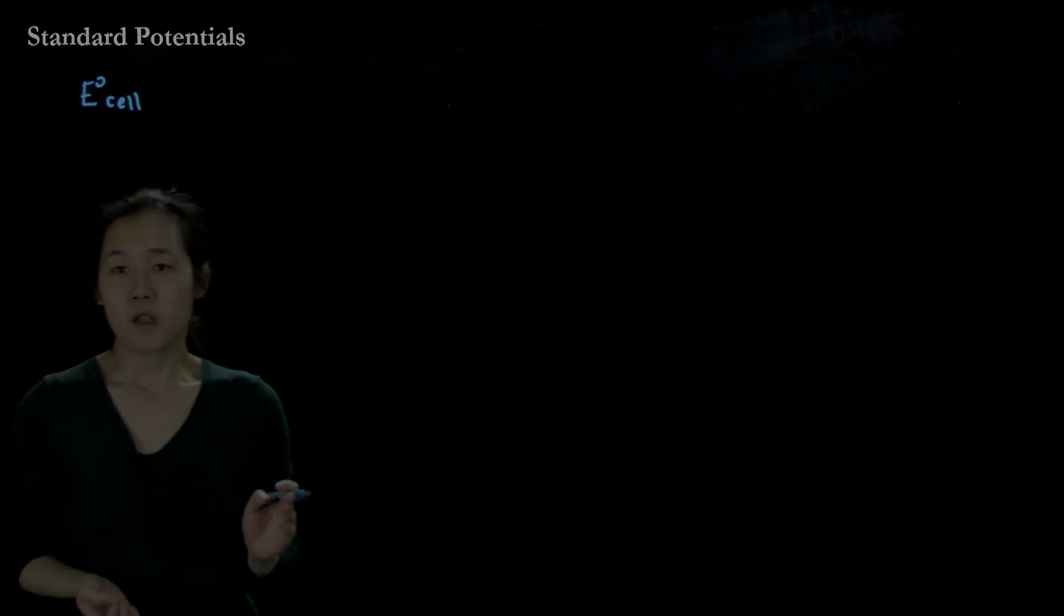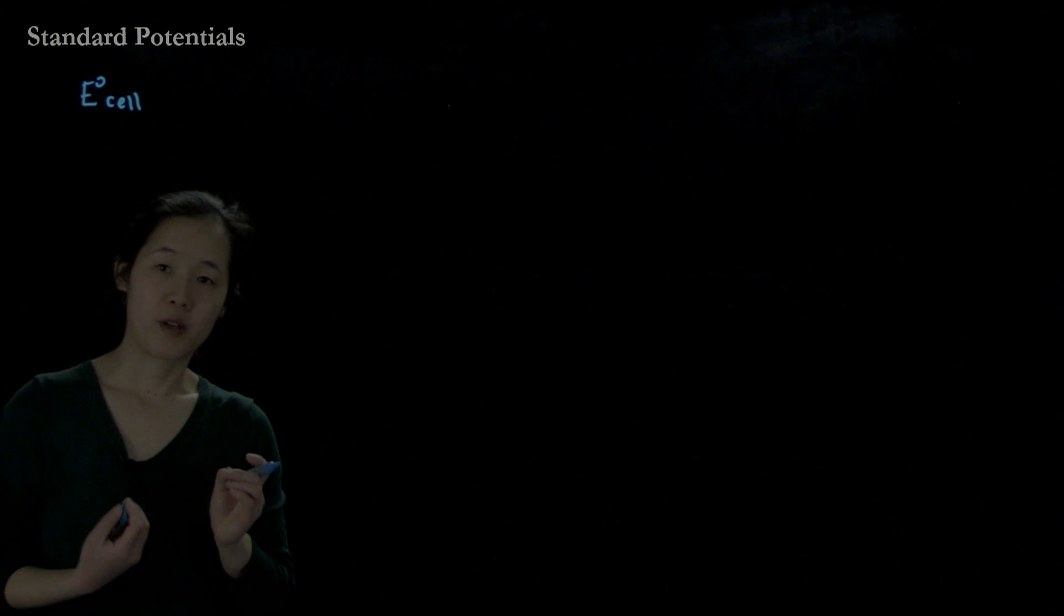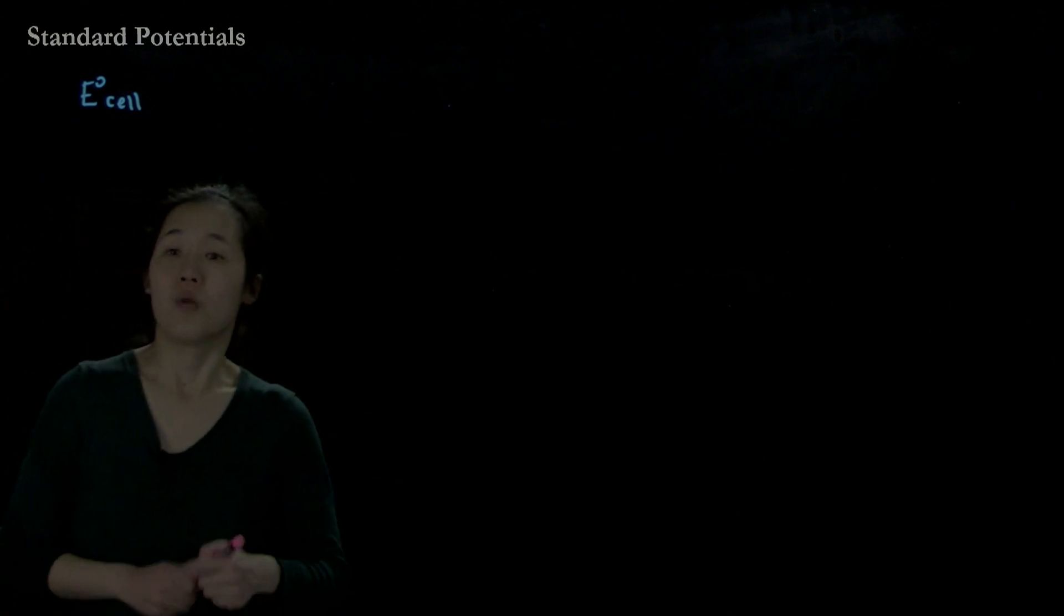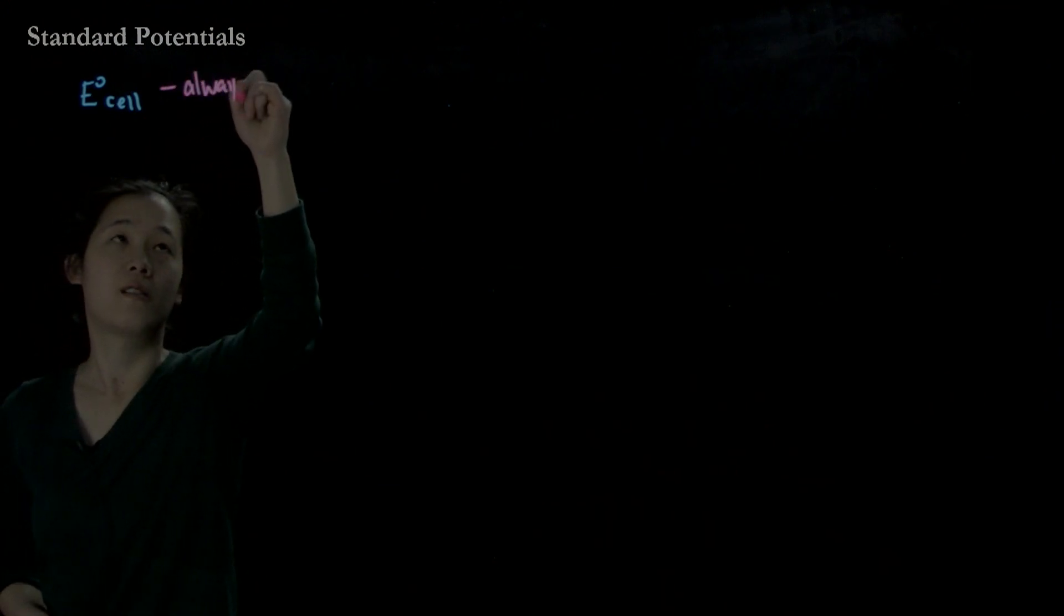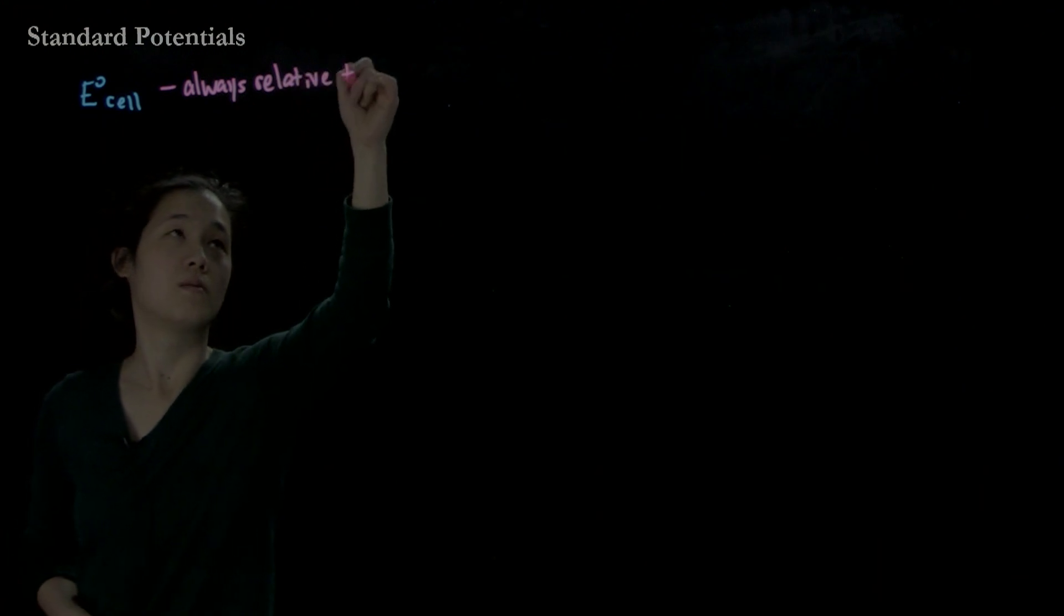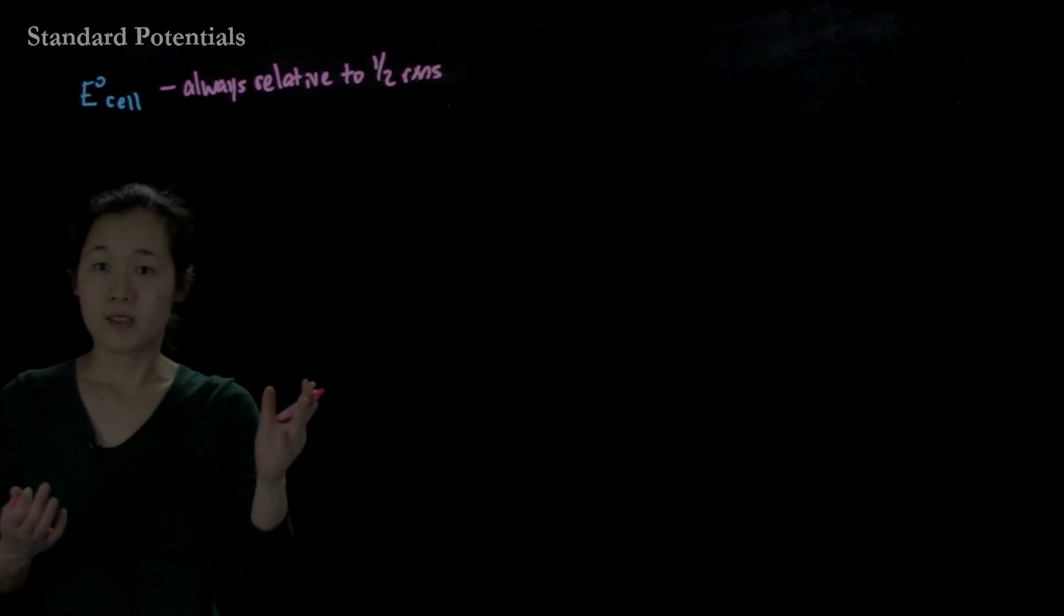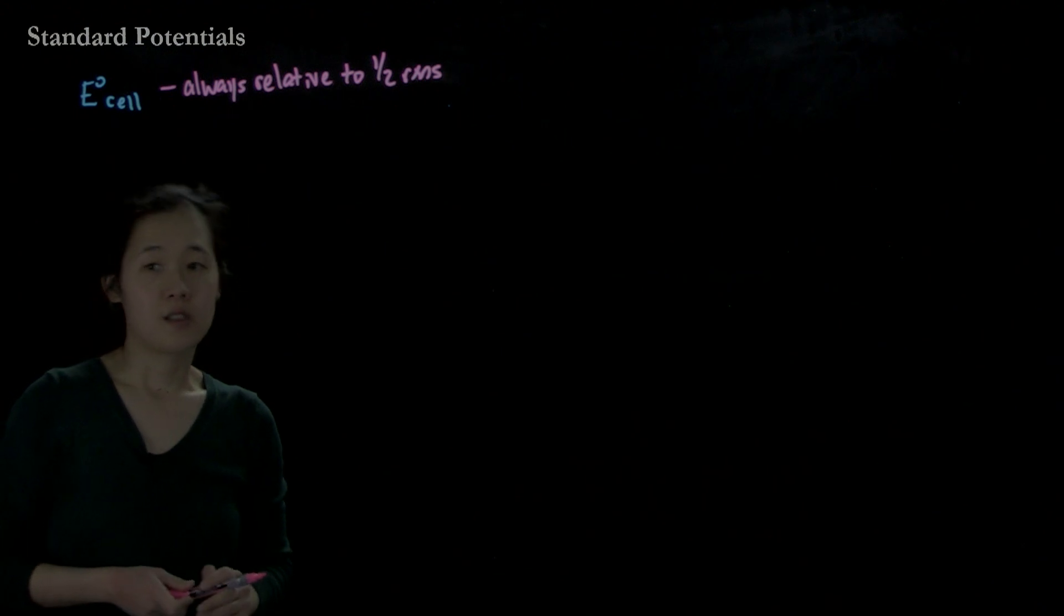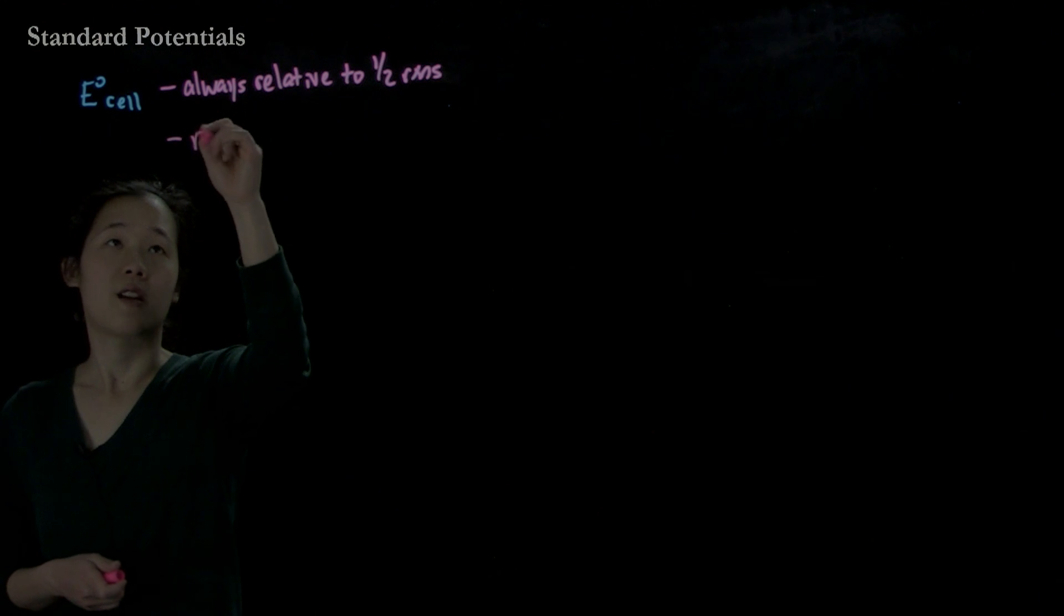The problem with that is, what if we don't want to actually run the experiment every time? What if we want to know what our potential is? The major problem is that this E cell is always relative to your half reactions. If you're changing your reactants, your potential is going to change, so it's really difficult to predict unless we have a standardized way.